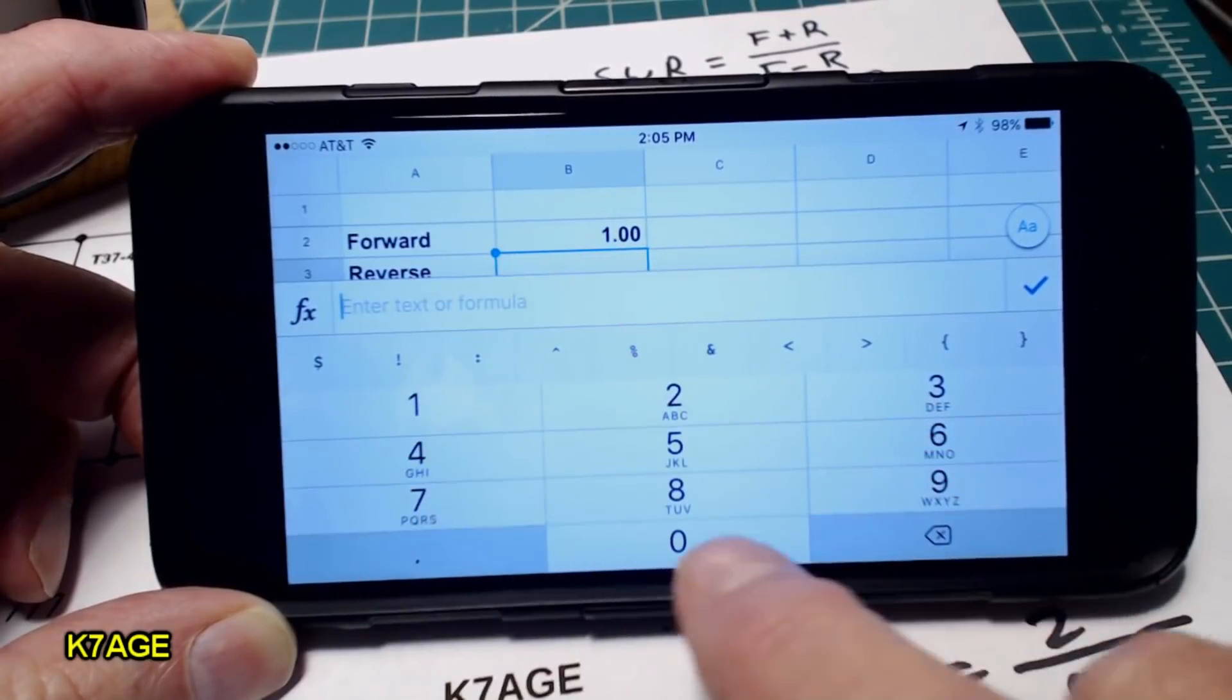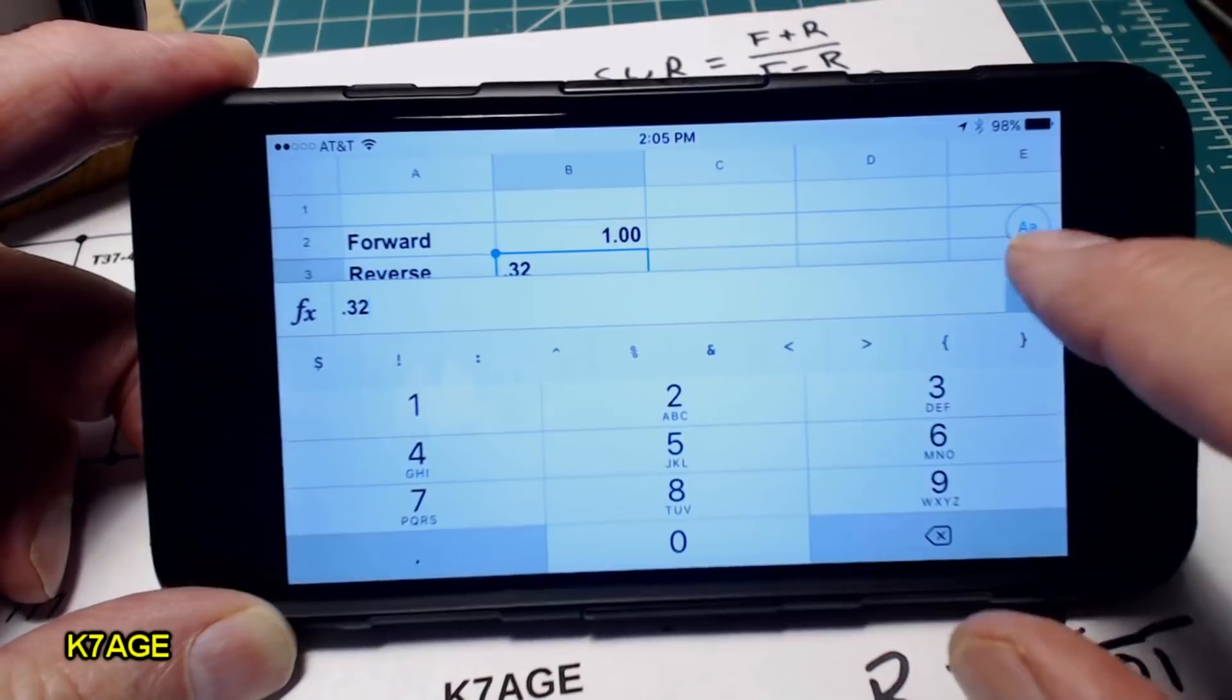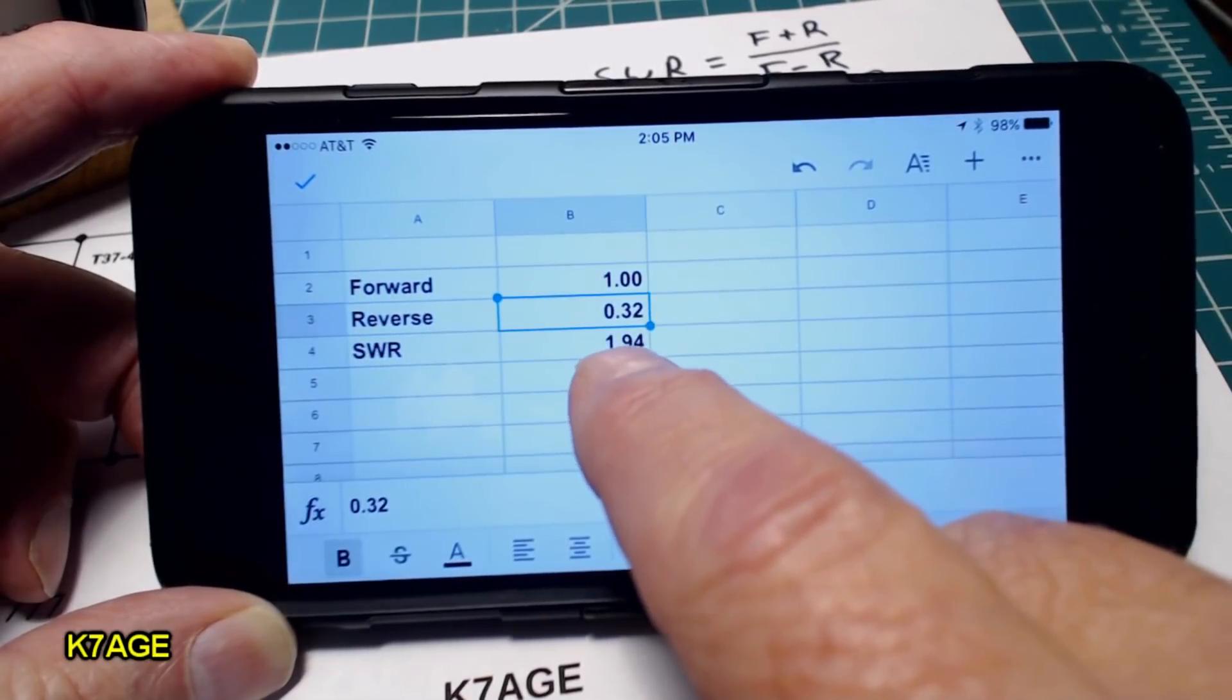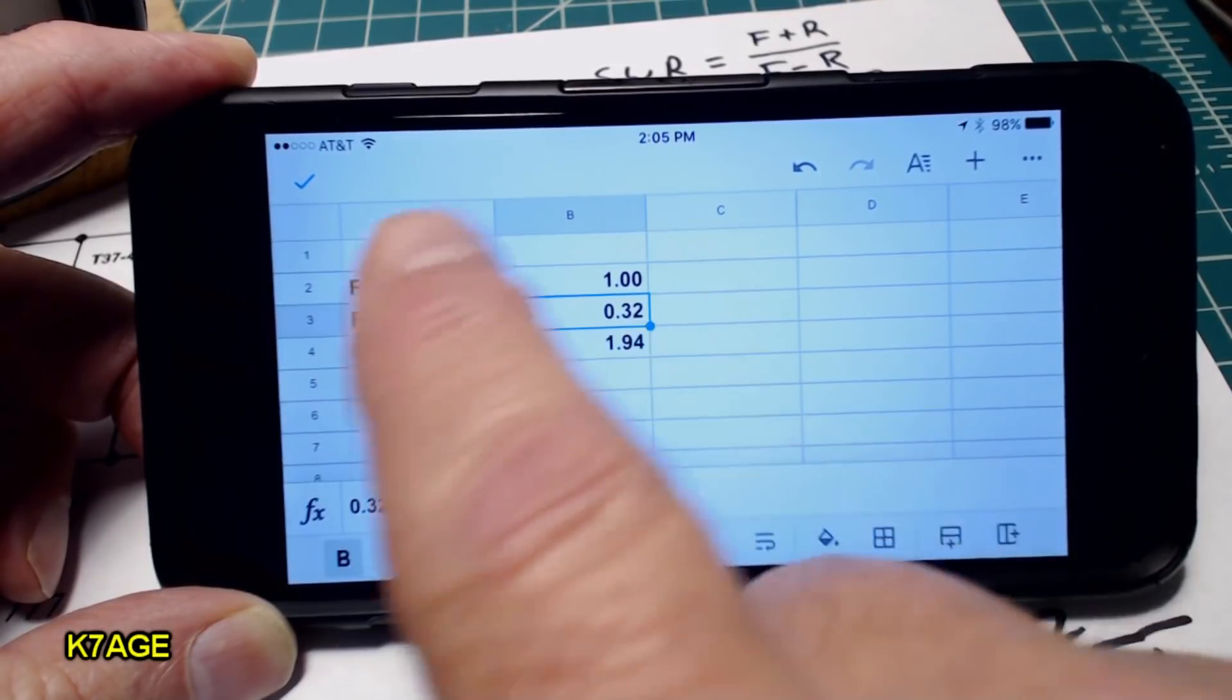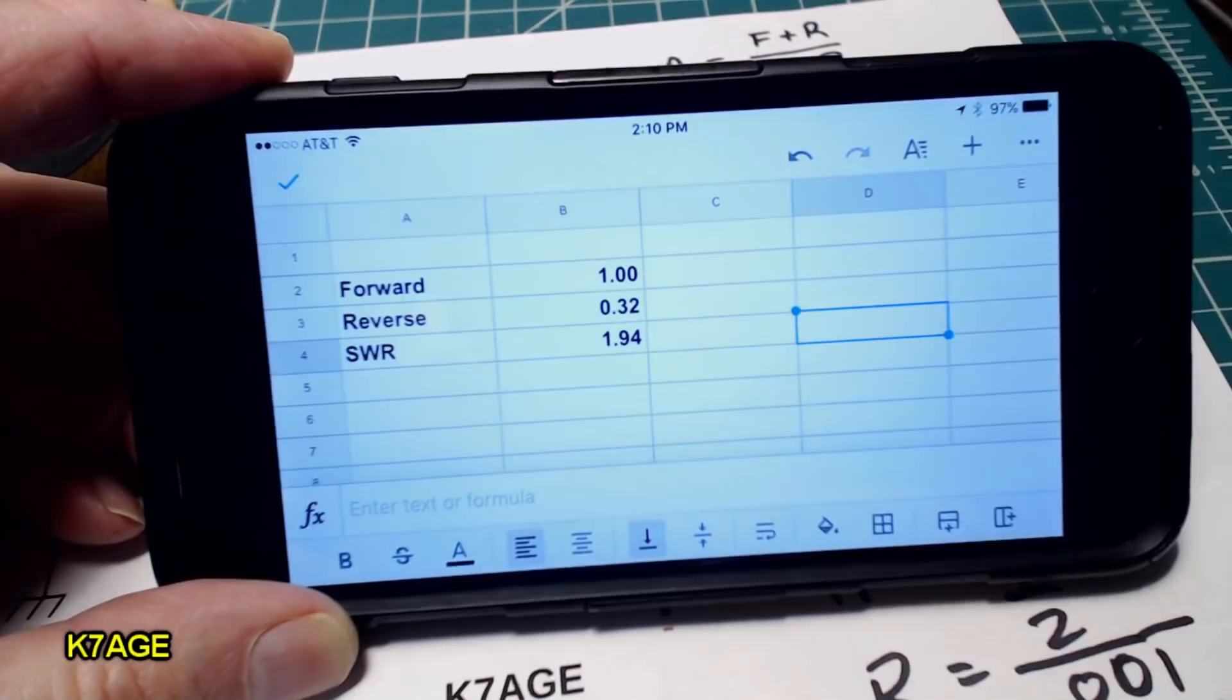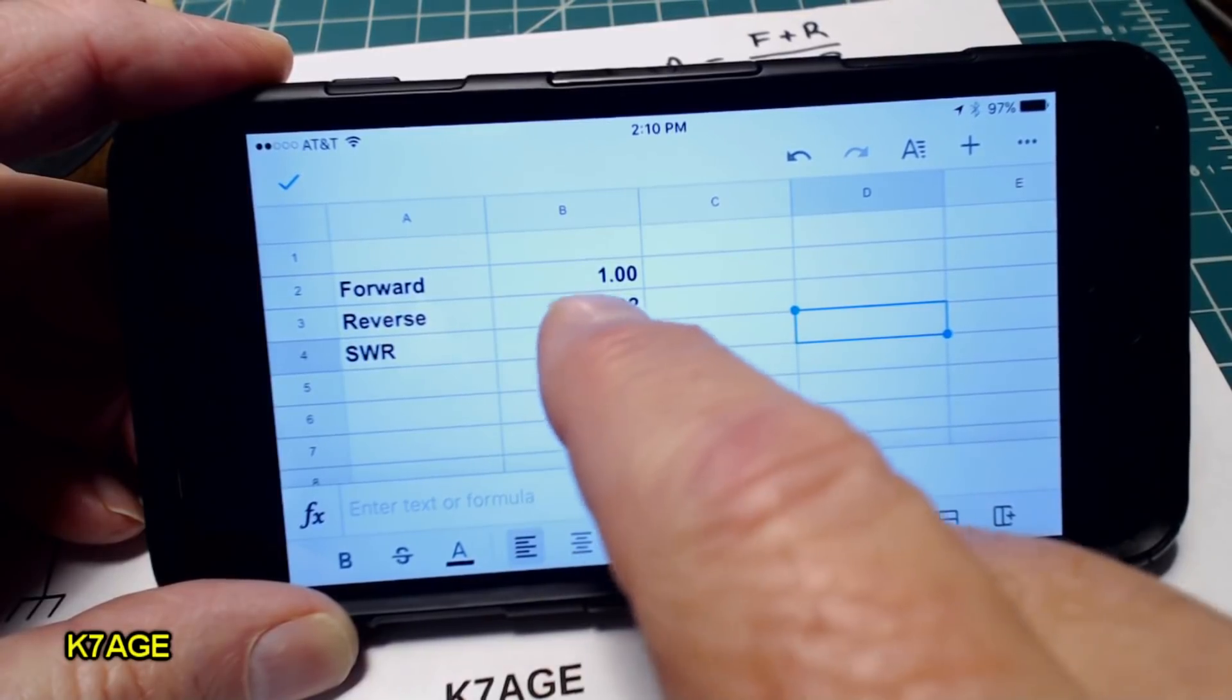So I programmed this formula into a little spreadsheet on my phone. So I'm going to enter in 0.32 for the reverse and it tells me the SWR is 1.94 which is basically 2 to 1 which is what I measured on my diamond meter. So that formula works.